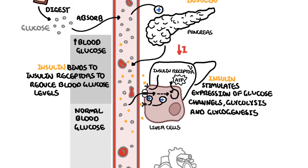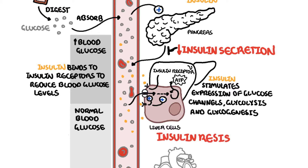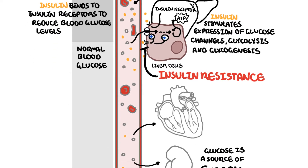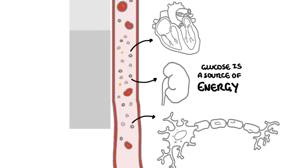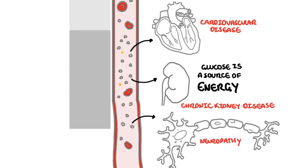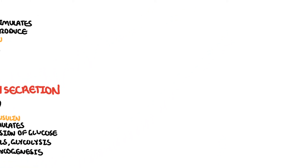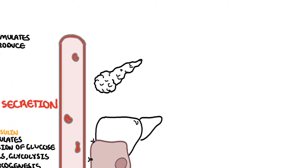Diabetes occurs when there is a problem in insulin secretion or peripheral resistance to the action of insulin. These problems lead to hyperglycemia and its associated complications such as cardiovascular disease, chronic kidney disease and neuropathy. Diabetes is divided into two main types: type 1 and type 2 diabetes mellitus.